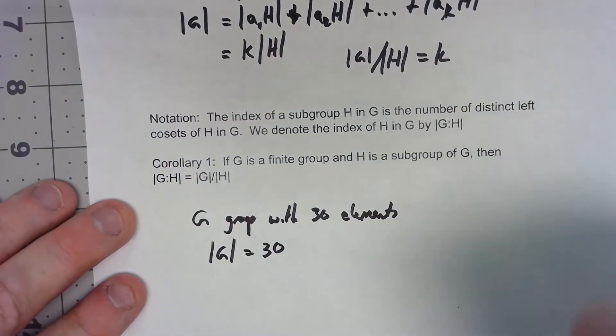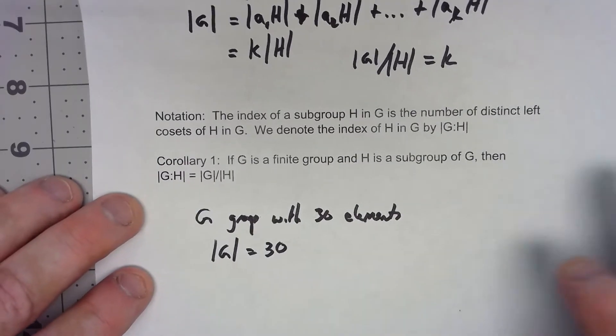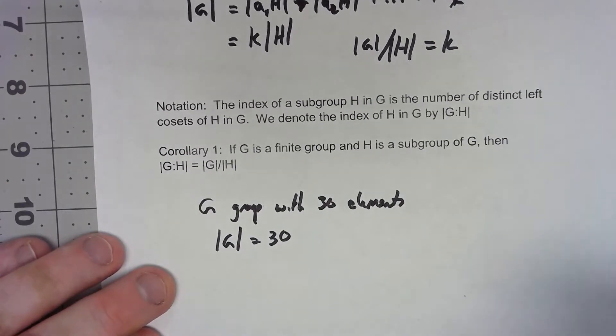It could be cyclic, it could be non-cyclic, it could be abelian, it could be non-abelian. Don't know any of that. All we know is it has 30 elements.